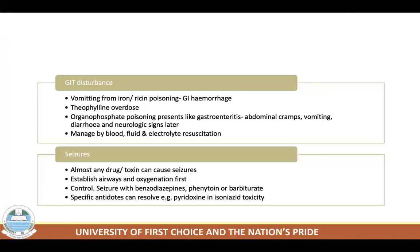Standard treatment for seizures from an unknown agent is a full therapeutic dose of a benzodiazepine — diazepam or lorazepam — followed by a loading dose of phenytoin or a barbiturate. In status epilepticus, rapid sequence intubation may be necessary, and thiopental with EEG monitoring ensures control of electrical seizure activity. Pancuronium bromide may be warranted. Specific antidotes such as pyridoxine can be used for isoniazid-induced seizures.